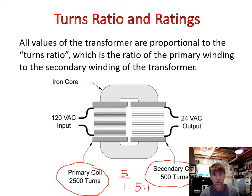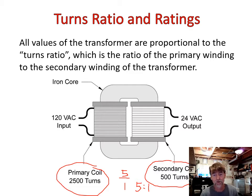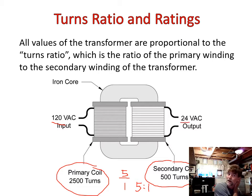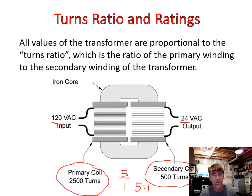That makes this a step-down transformer. With 5 turns in the primary for every single turn on the secondary, we are stepping down by a turns ratio of 5 to 1, which means the voltage does the same. We have 120 volts on the primary side, and the voltage ratio is exactly the same as the turns ratio — for every 5 volts on the primary side, we find 1 volt on the secondary side. So 120 volts divided by 5 gives us 24 volts as the output on the secondary side.